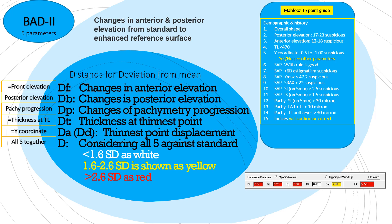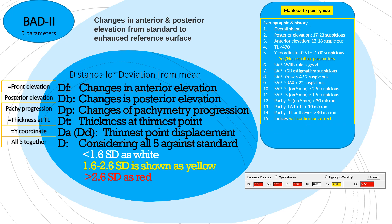BADD2 has five parameters and is very important — more important than anything else. In the 15-point guide, we said to look for five basic parameters: posterior elevation (DB), front elevation (DF), thinnest location (DT), and the Y coordinate, which is thinnest location displacement (DA). BADD2 components are: DF — changes in front elevation; DB — changes in posterior elevation; DP — pachymetric progression; DT — thickness of the thinnest location; DA — thinnest point displacement; and Total D — considering all five parameters.